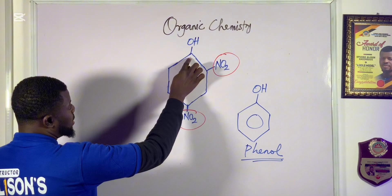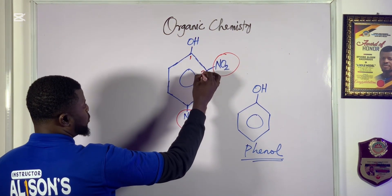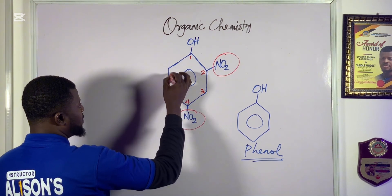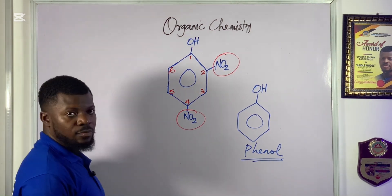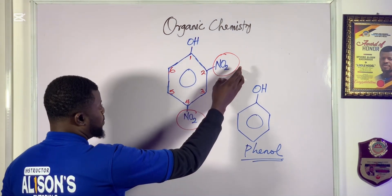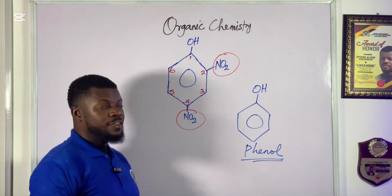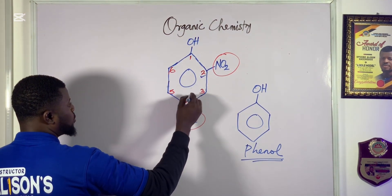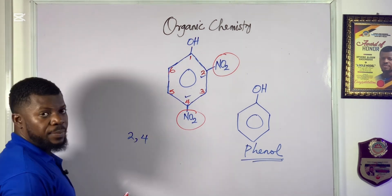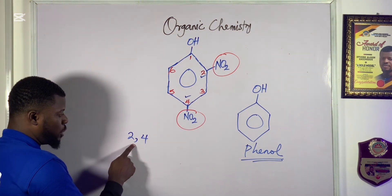The phenol is already taking position one. Then position two is here, then three, four, five, and six. The nitro groups are found at position two and position four. So we take those two positions to give us 2,4 — and pay attention: between numbers you use a comma.